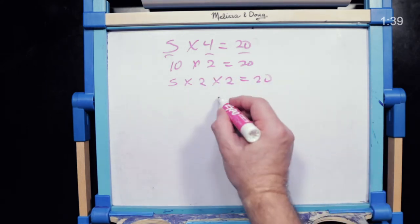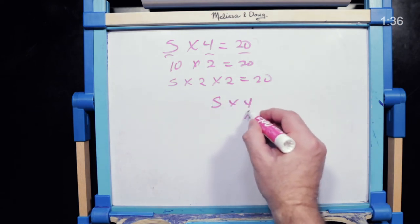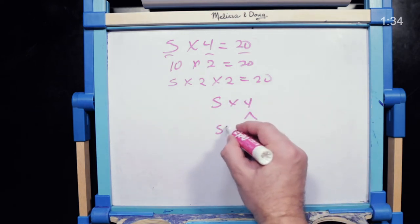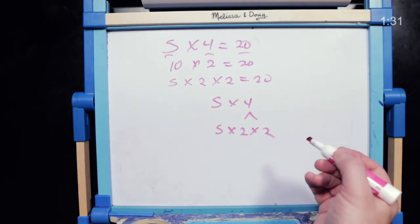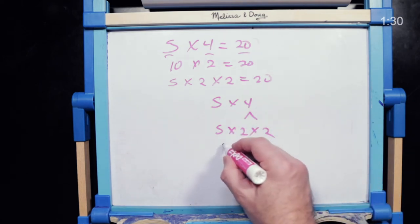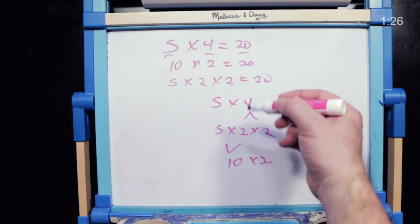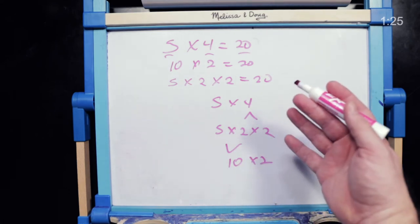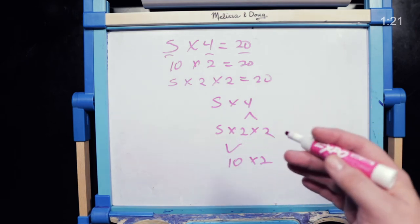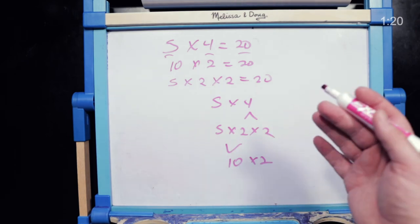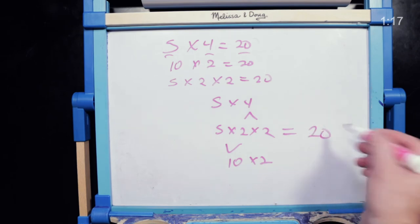So notice if I have 5 times 4, I can refactor this into 5 times 2 times 2, which I can then refactor into 10 times 2. These are interchangeable. The structure of the equation has changed, but the outcome, or external behavior, has not changed. All three of these equal 20.